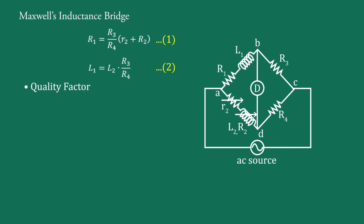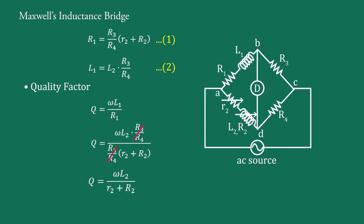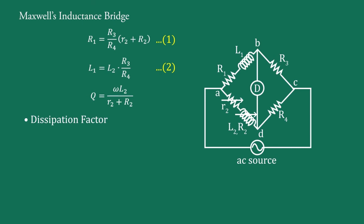The third parameter is quality factor Q. For a series RL circuit, Q = ωL1/R1. Substituting the values of R1 and L1, R3/R4 cancels, giving Q = ωL2 / (r2 + R2). The fourth parameter is the dissipation factor Df. For a series RL circuit, Df = R1/(ωL1) = 1/Q. Taking the reciprocal of Q, we get Df = (r2 + R2) / (ωL2).